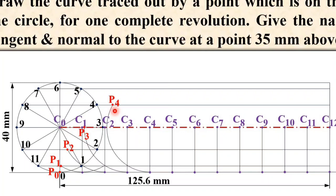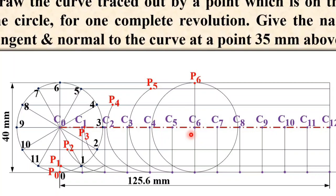Draw the arc with C5 as the center to get P5. Then C6 as the center to get P6. Here, P6 can also be found easily by simply extending the vertical line — so do not waste time drawing the full arc. Simply extend the line to get P6.